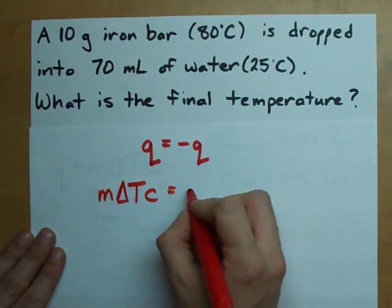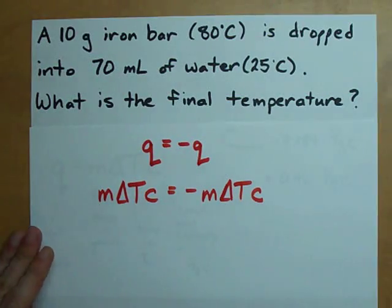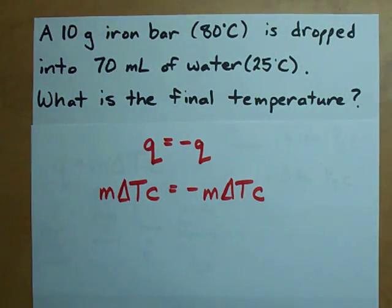Long story short, M delta Tc for the water is negative M delta Tc for the iron, because heat gained is heat lost. Now, we need to fill in some numbers.